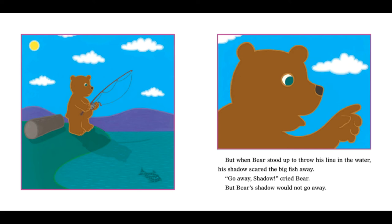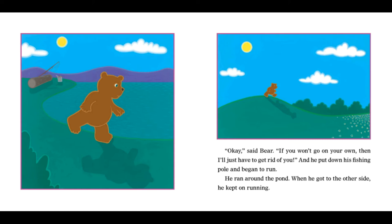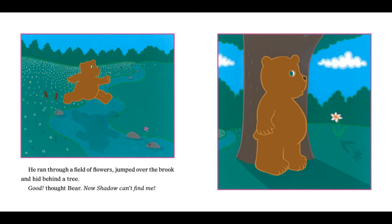Go away, shadow, cried Bear, but Bear's shadow would not go away. Okay, said Bear. If you won't go on your own, then I'll just have to get rid of you. And he put down his fishing pole and began to run. He ran around the pond and when he got to the other side, he kept on running.